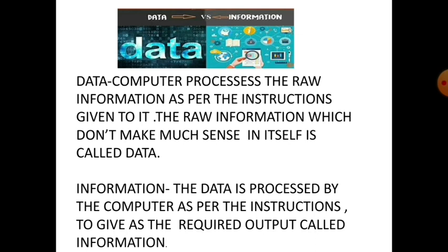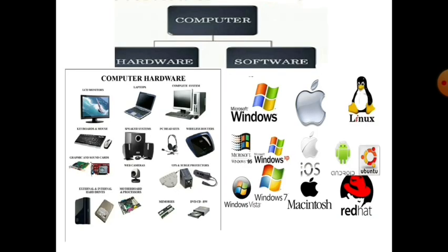Let's take an example. Suppose you give the problem 6 plus 6 to the computer. When you enter these digits along with the mathematical operation, the process is done in the CPU. After processing, the CPU gives the answer to the output device. The output we get will be 12. So 6 plus 6 is the raw data, and the output we got from the CPU — that is 12 — is the information.